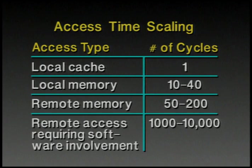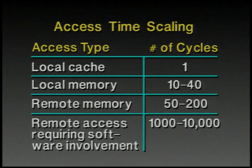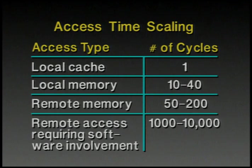As one scales up the machine size, the latency to access remote memories increases, and this increase is unavoidable. As typical numbers on processors today: local cache access might take one cycle; accessing local memory might take 10 to 40 cycles; accessing a remote memory across an interconnection network might take 50 to 200 cycles; and remote access requiring a trap to the operating system might take 1,000 to 10,000 cycles.